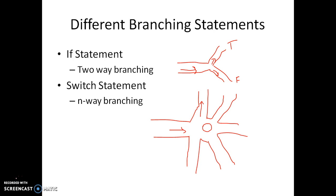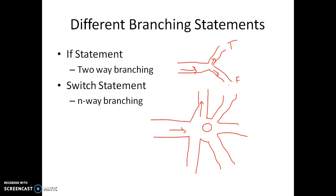We have two different branching constructs: the if statement and the switch statement. If is called a two-way branching statement because after evaluation it can take two paths — either the true path or the false path.